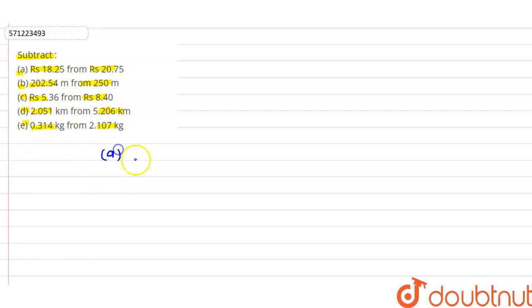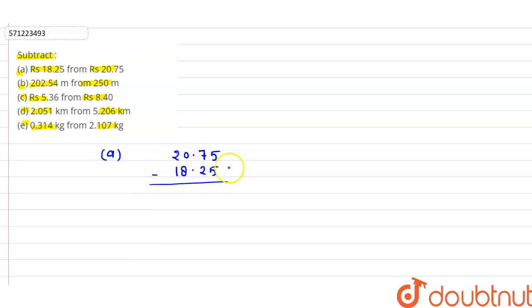The first part, part A: we have to subtract 18.25 from 20.75. We write 20.75 and subtract 18.25. Subtracting digit by digit: 5 minus 5 is 0, 7 minus 2 is 5, then after the decimal, we cannot subtract 8 from 0 so we take a carry — 10 minus 8 is 2, and 1 minus 1 is 0. So 20.75 minus 18.25 equals 2.50.